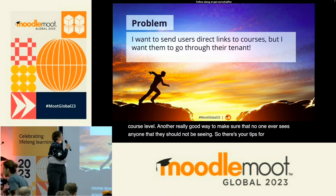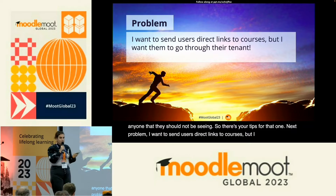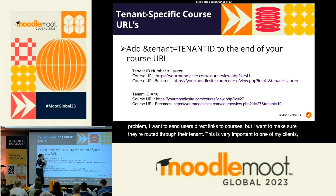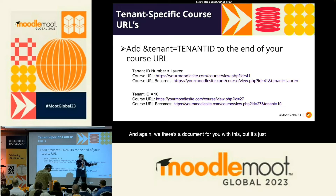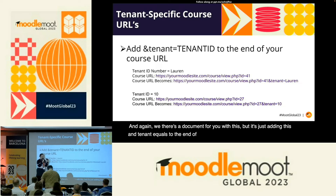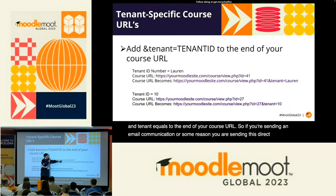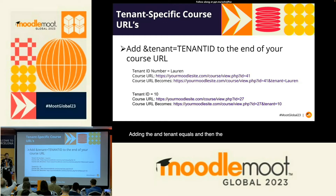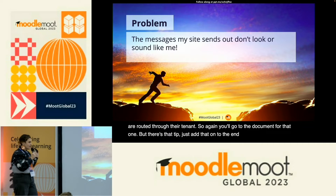Next problem: I want to send users direct links to courses but I want to make sure they're routed through their tenant. The solution is just adding `&tenant=` to the end of your course URL. So if you're sending an email communication or a direct course URL to the client, adding `&tenant=` and then the tenant ID will ensure that they are routed through their tenant. There's a document for that one — just add that on to the end of your URL.